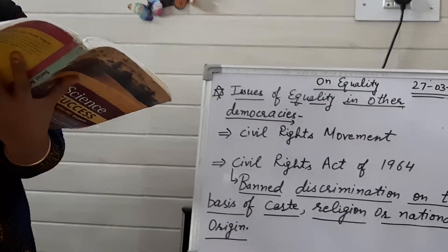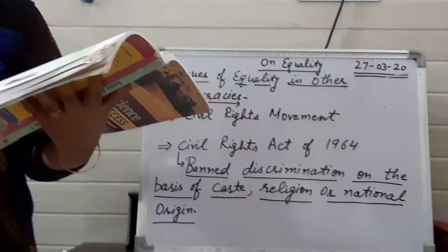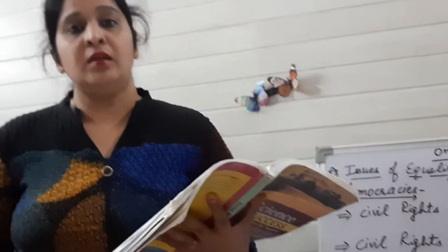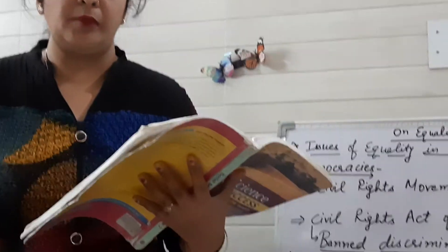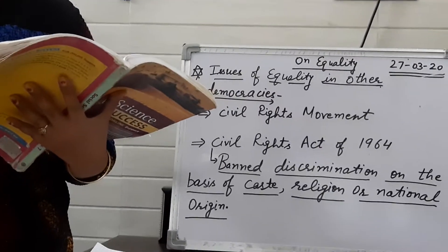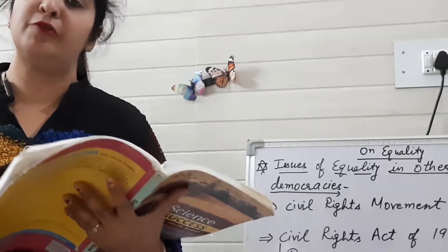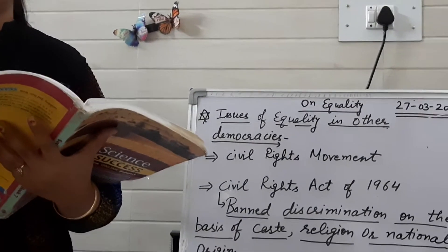In the USA, people of African American origin were often looked down upon by white Americans. American people are basically white Americans, and some other people who have lived there for a very long time are called African Americans. The ancestors of African Americans were slaves who were brought to America from Africa. 'Ancestors' means persons in your family who lived a long time before you.